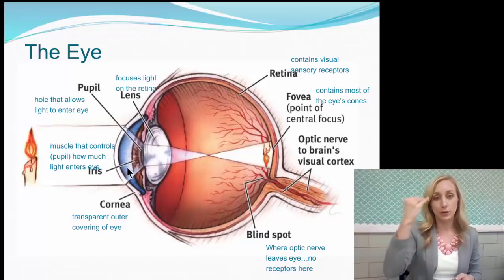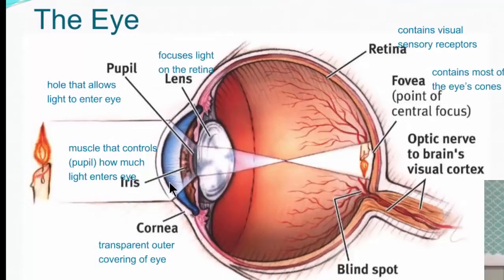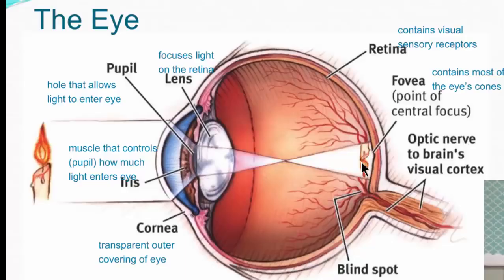Through the pupil, controlled by the iris, light goes to the lens. The lens is what focuses light and the image onto the retina. The lens is also what flips the image you're receiving upside down — very interesting. As shown in this diagram, the candle right side up is flipped by the lens, which projects an upside-down image onto the retina.